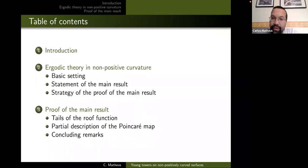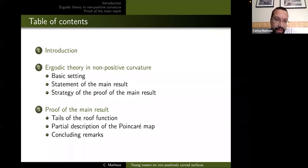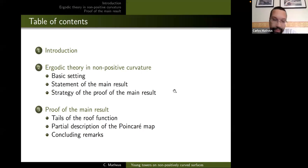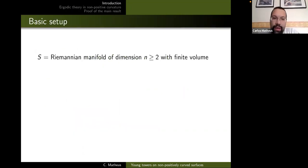Then I will talk about non-positive curvature for surfaces and what was known prior to our result, which is basically a result of constructing Young towers and obtaining statistical laws — in particular the decay of correlations and central limit theorems — for a particular class of non-positively curved surfaces. In the final part of the talk I'll explain the main ideas of the proof.